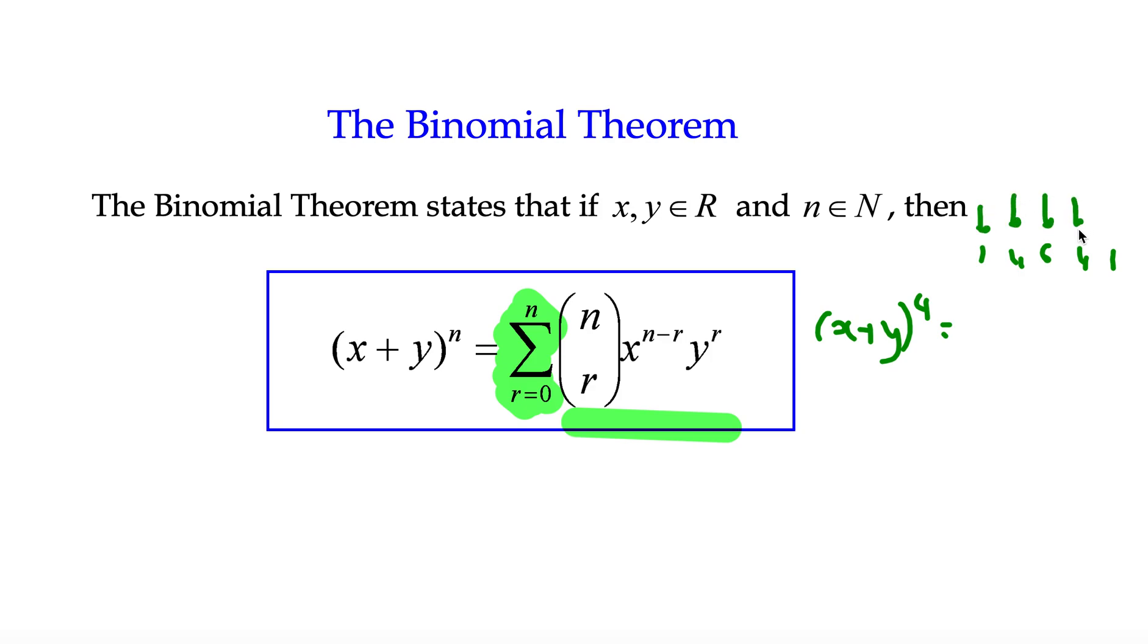If x plus y to the power of 6, we'll have 7 terms because we count from 0 up to 6. So that's the binomial theorem. It's going to help give us a structure from which we can then expand and simplify. So let's have a look at the actual binomial theorem at work.